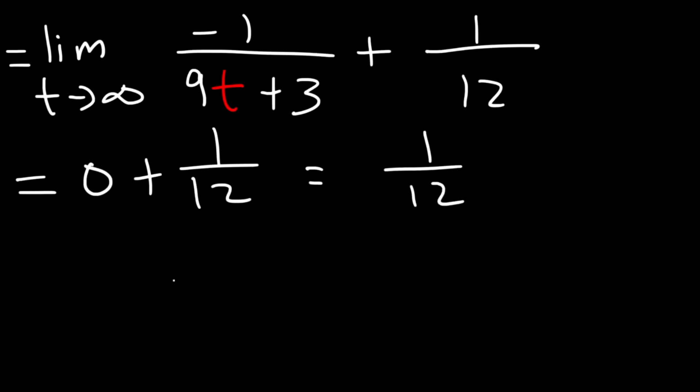So we have 0 plus 1 over 12. The final answer is 1 over 12. Because it's not infinity, this integral is convergent.